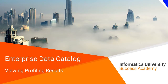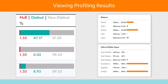Welcome to Viewing Profiling Results. A data steward may need to run a profile on a data asset and understand the strengths and weaknesses of its data and metadata. Moreover, she might need to perform discovery tasks on a relational data source with flat files with a huge number of columns. In this video, you will learn how to explore associated data profiling statistics to determine the quality of the assets using EIC.